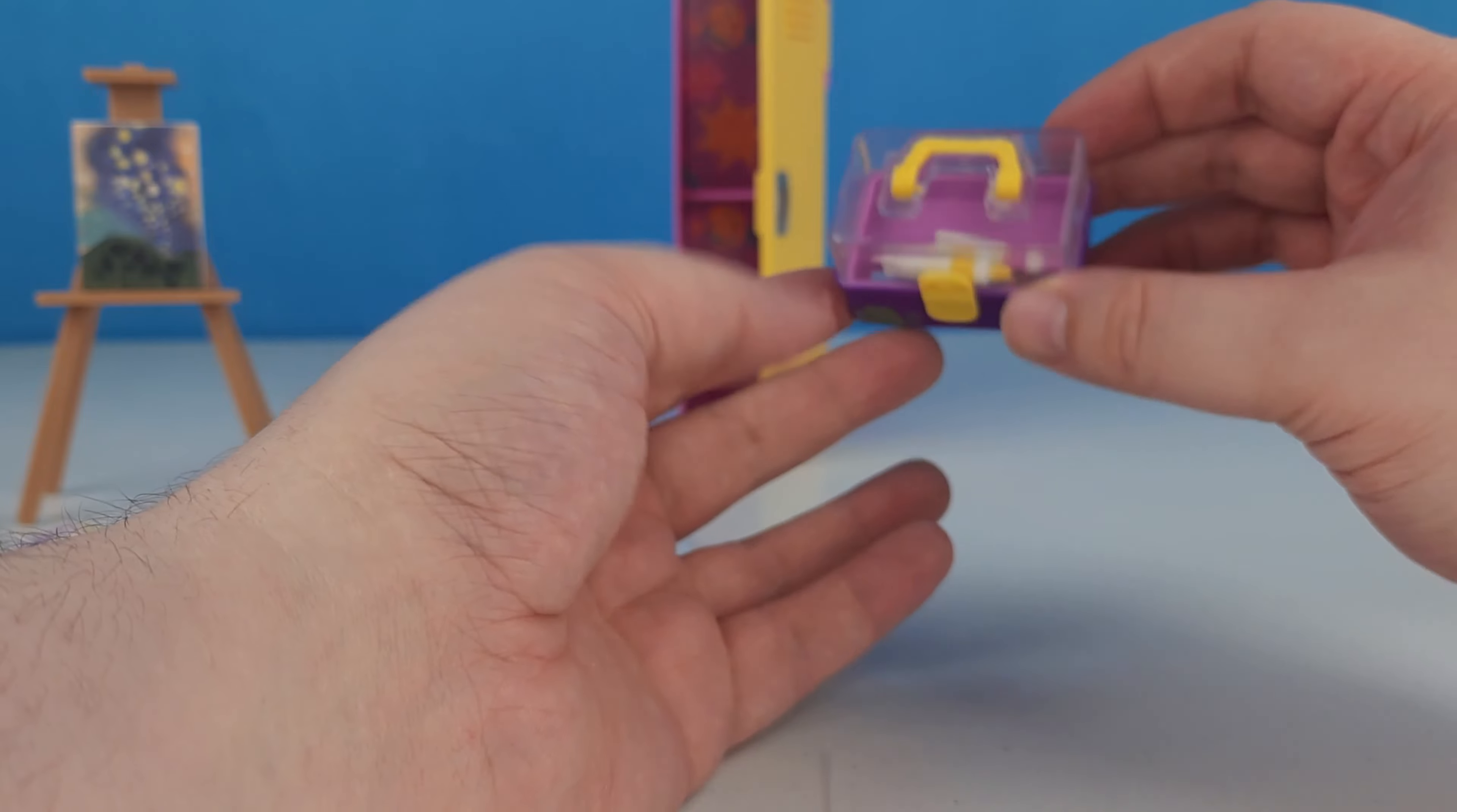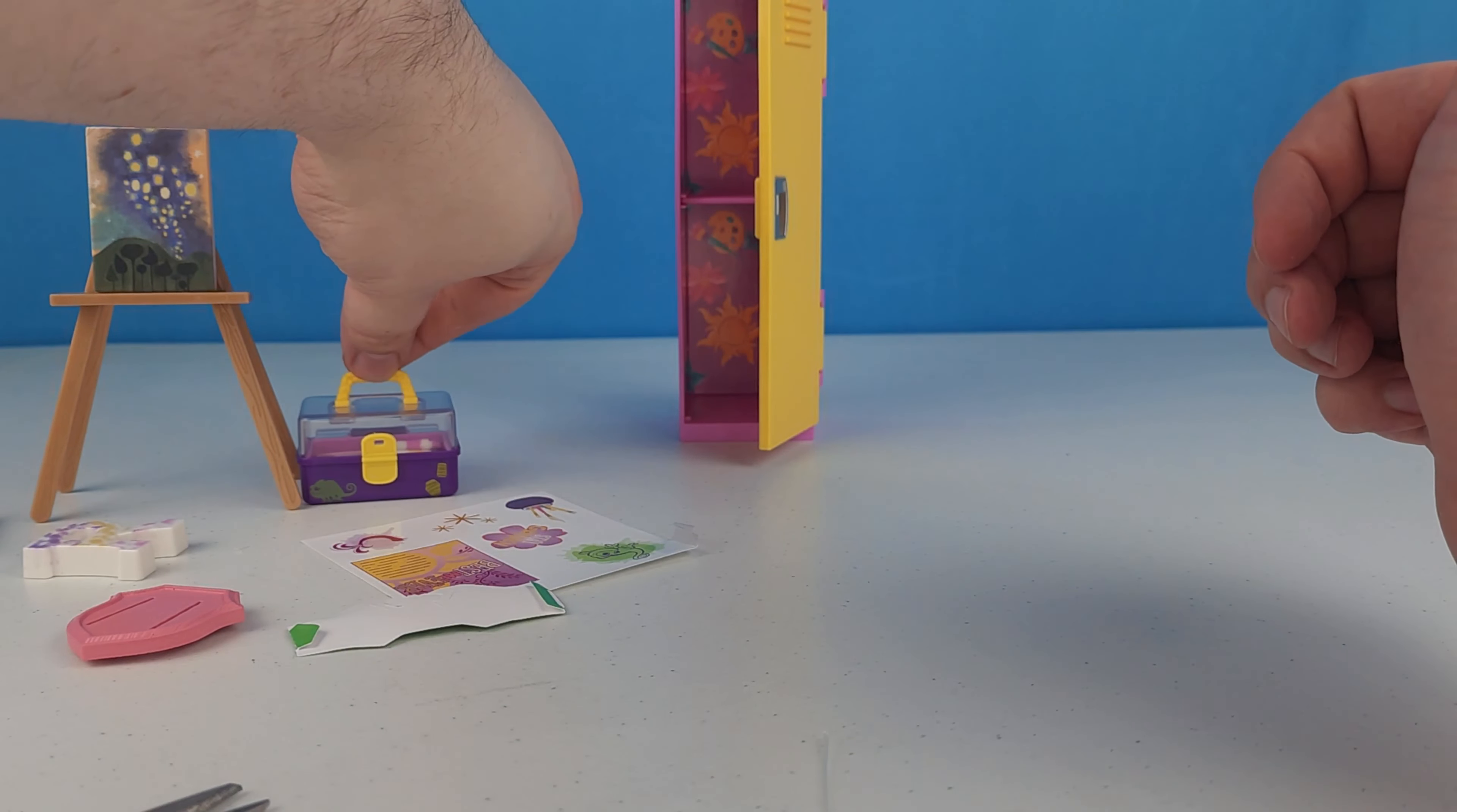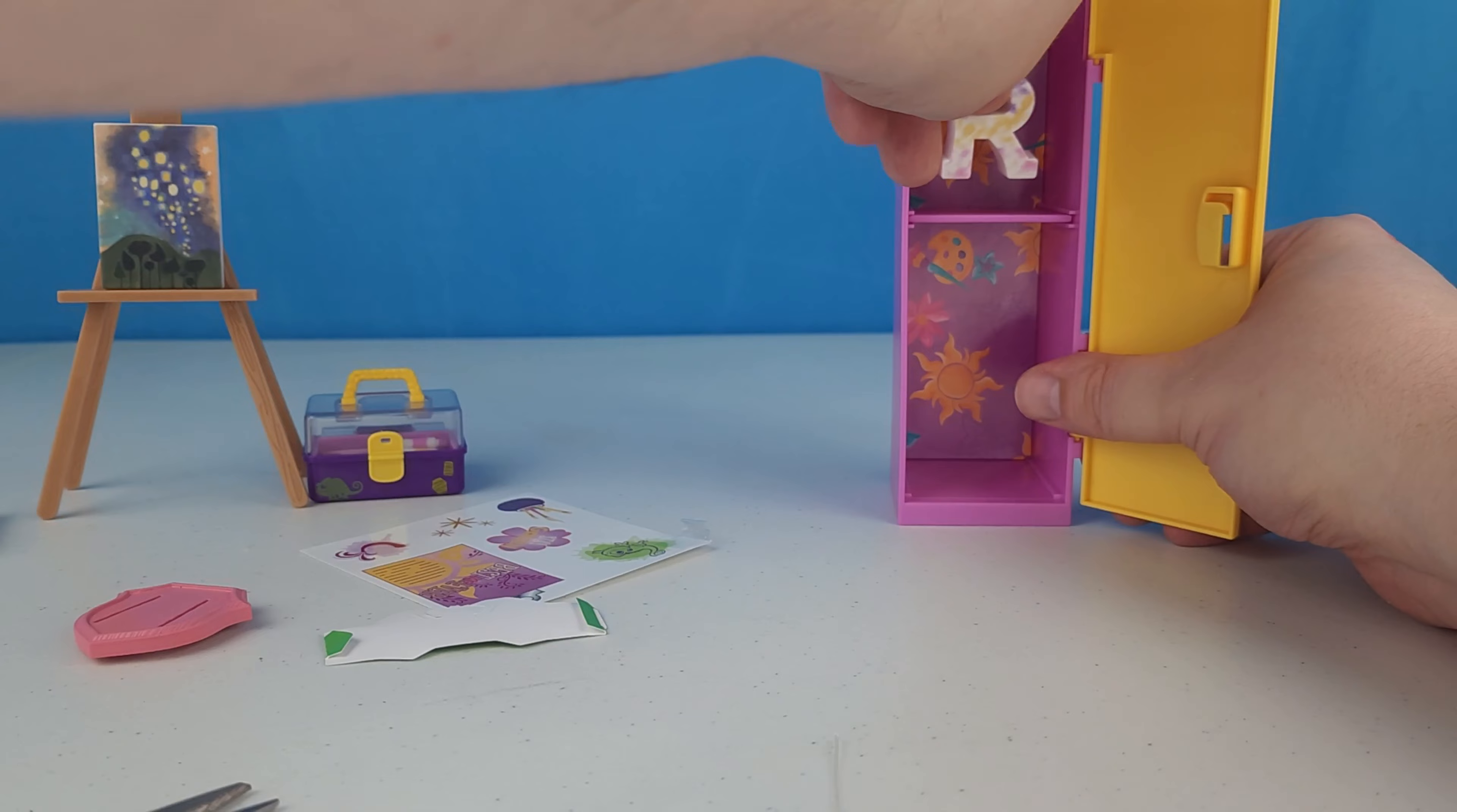And all of those go right in the little storage box and there you have it. She can even pull up the handle and carry her art supplies away. So her art supplies are all set right there. We got this little R for Rapunzel so I guess that can go hang out in her locker.